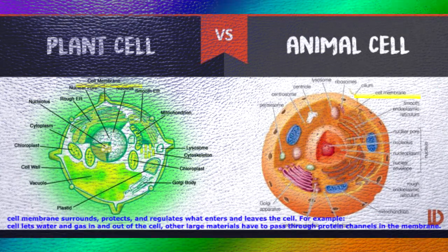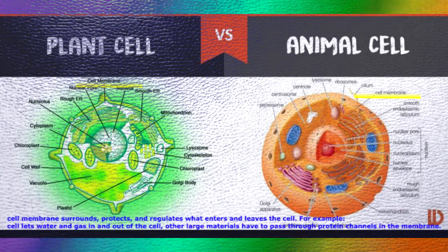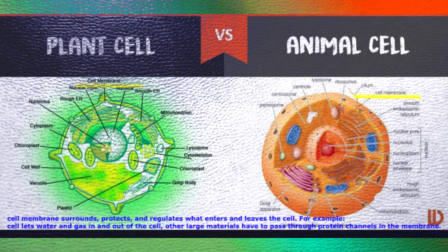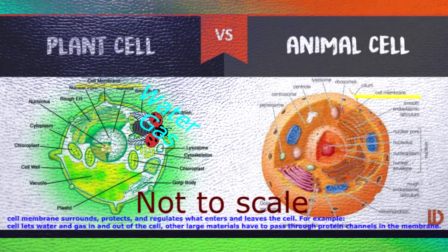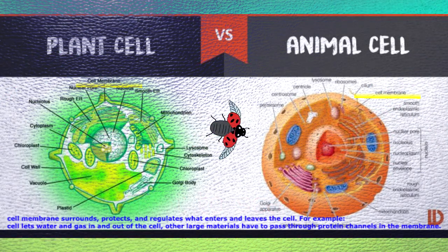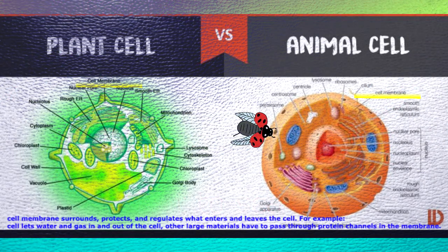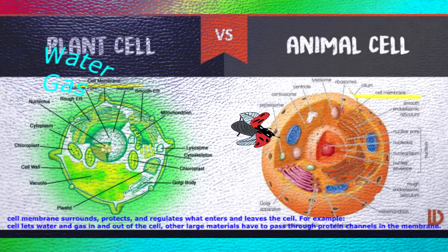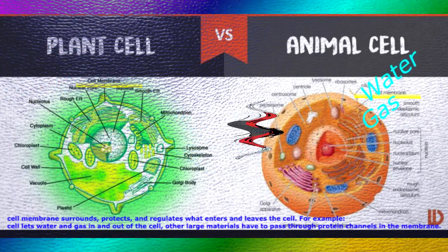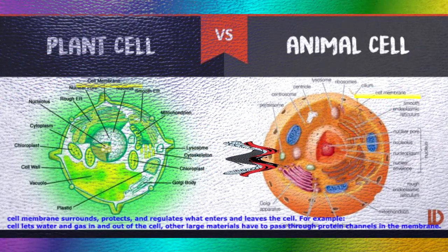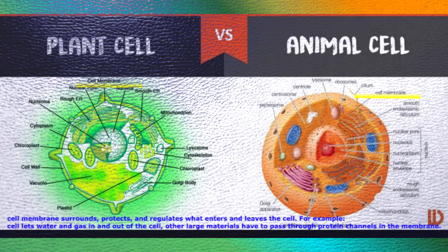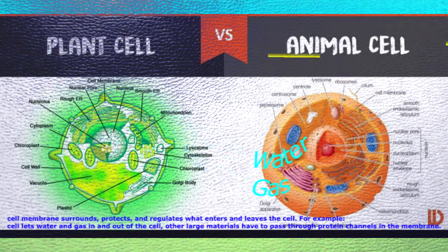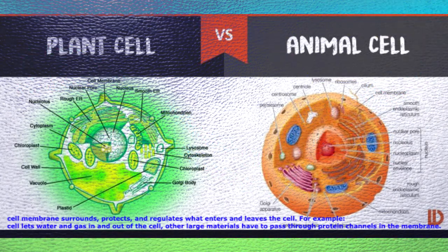Cell membrane surrounds, protects, and regulates what enters and leaves the cell. For example, the cell lets water and gas in and out of the cell. Other large materials have to pass through protein channels in the membrane.